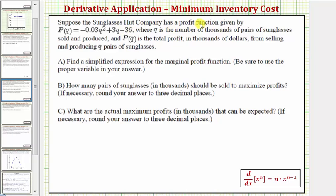Suppose the Sunglasses Hut Company has a profit function given by P of Q, where Q is the number of thousands of pairs of sunglasses sold and produced, and P of Q is the total profit in thousands of dollars from selling and producing Q pairs of sunglasses. We have three parts to this question.